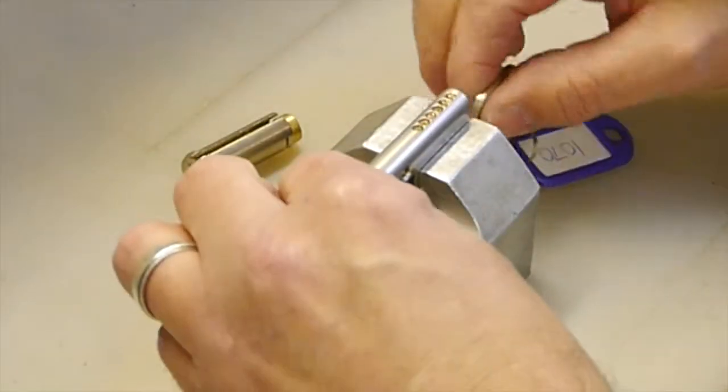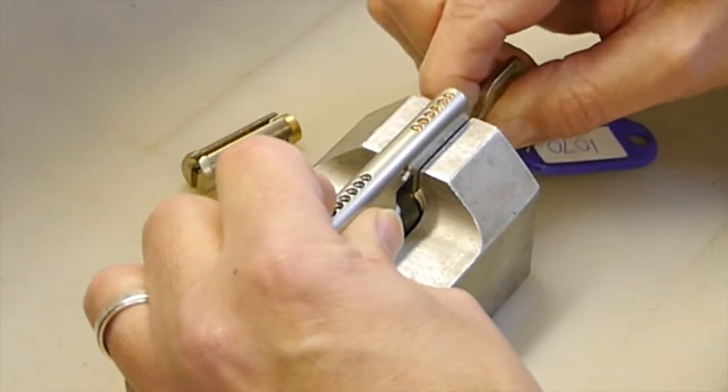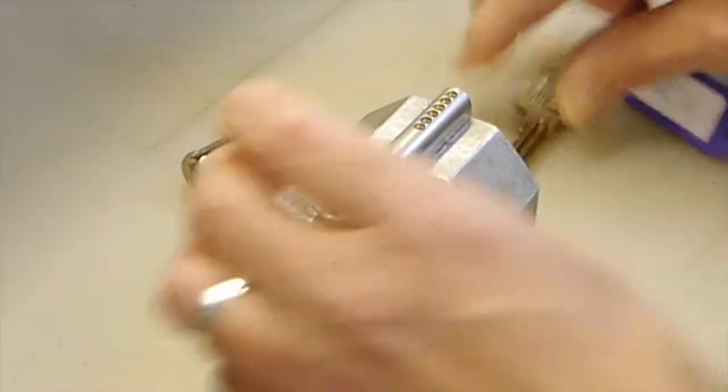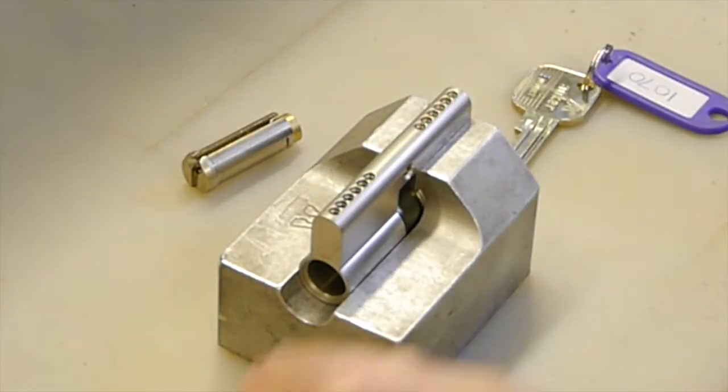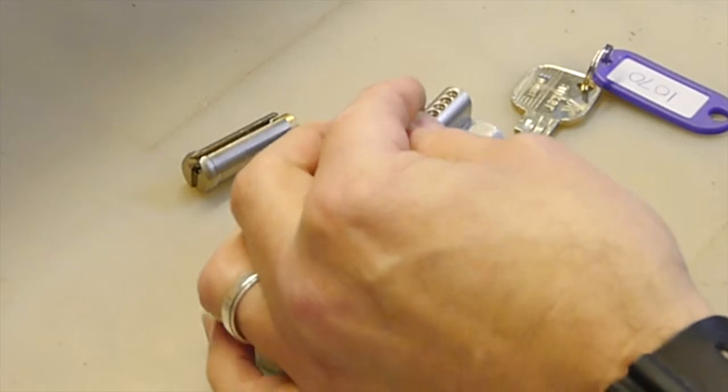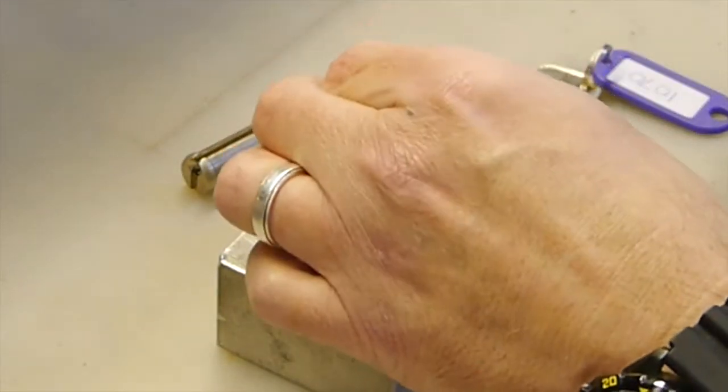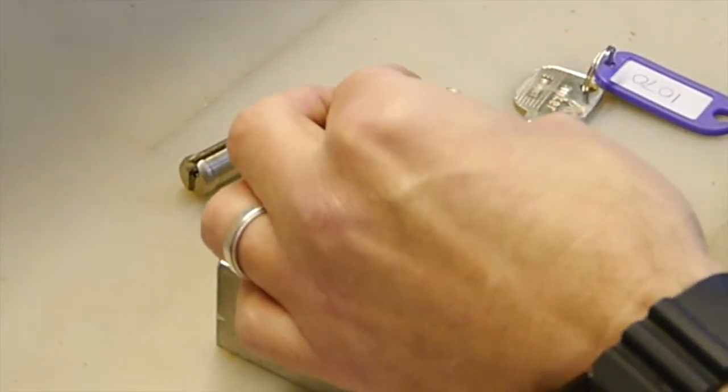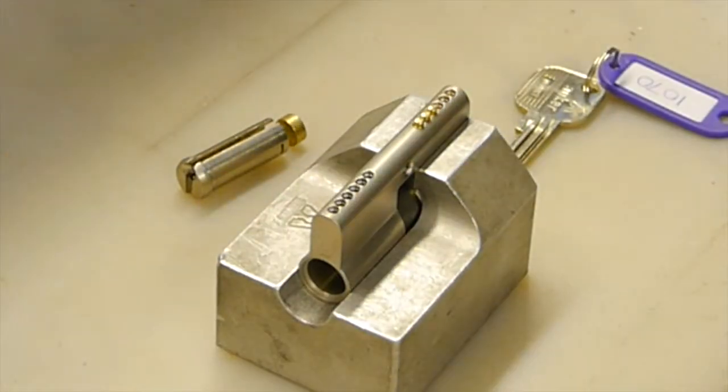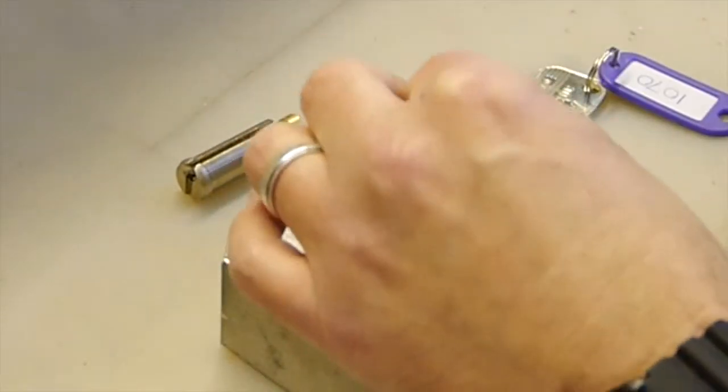Once we've done that, make sure that the key turns, which it does. Take the key out carefully, make sure the whole thing doesn't come apart. Grab the hammer. What we're going to do is just put the top pins, these plugs that hold everything together. Give it a little light tap. Don't want to commit to anything yet. Make sure that it's all going to be working before we finish all those down so that they're flush with the top of the cylinder.